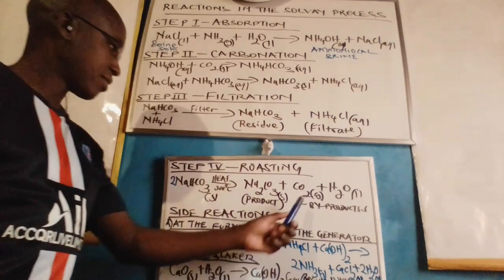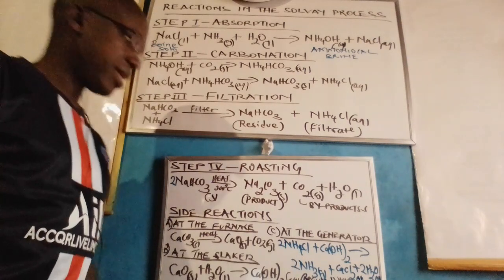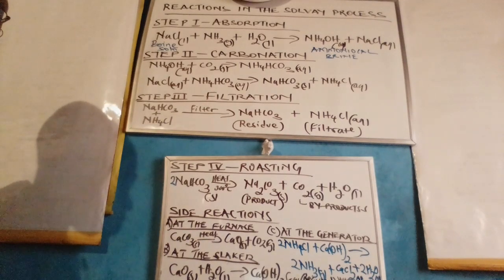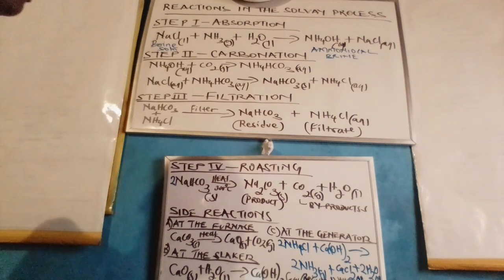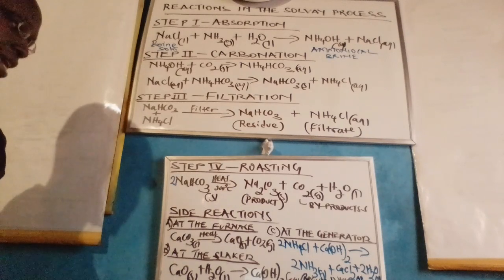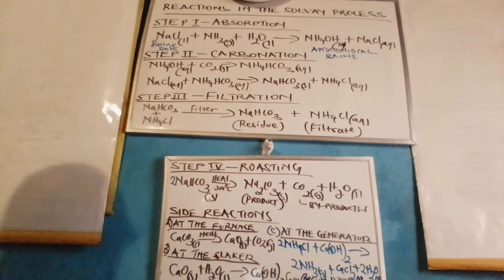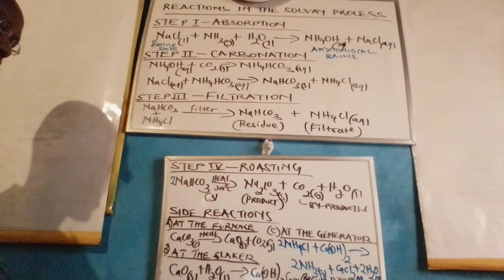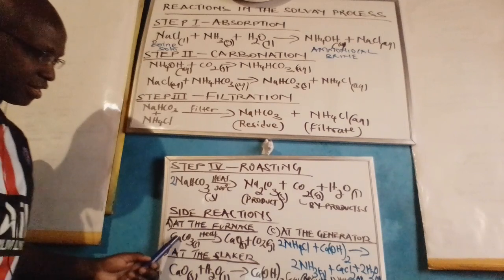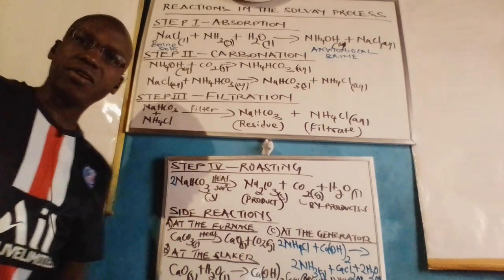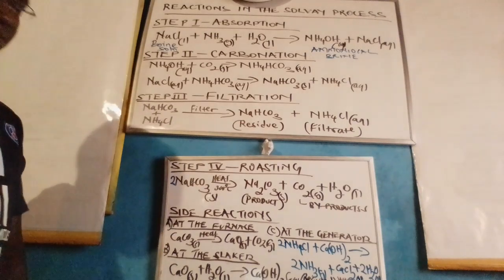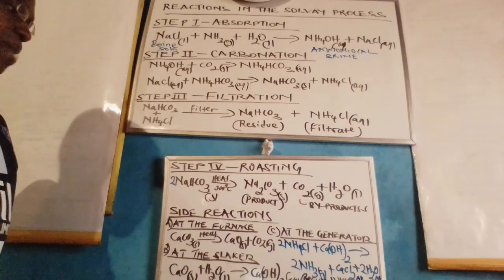The Solvay process is made up of six chambers. The main reactions happen in the absorption chamber, the carbonator, and the filtration chamber. After this, roasting happens, which may be done outside any chamber. One additional chamber is the furnace, otherwise known as a kiln. The role of the furnace is to produce carbon dioxide by either decomposing calcium carbonate (limestone) or by combustion of coke with oxygen.